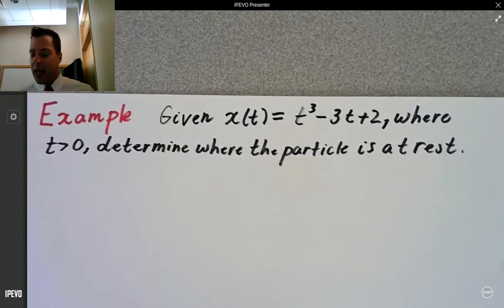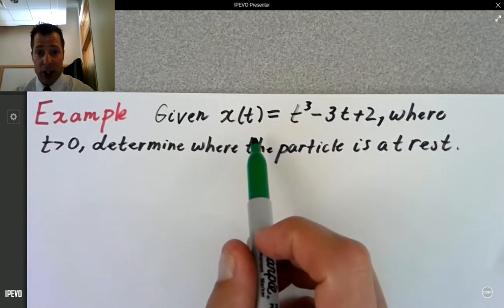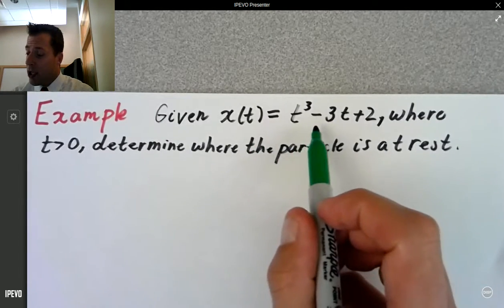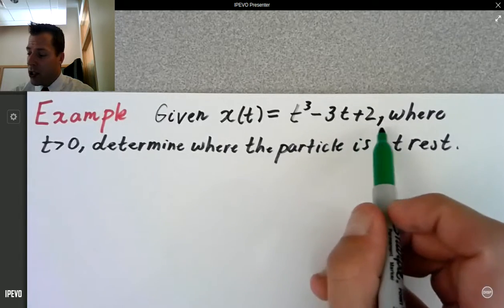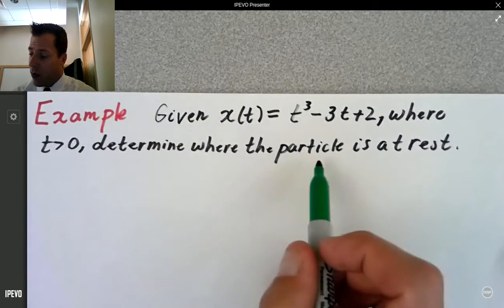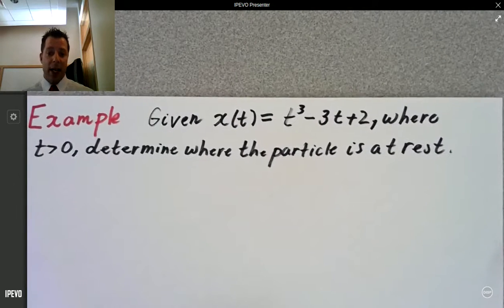It says given x of t, so that's our position function: t cubed minus 3t plus 2, where t is greater than 0, determine where the particle is at rest.